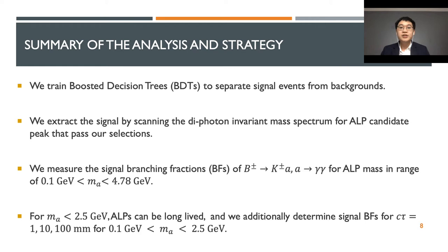Next, we train a boosted decision tree to separate signal events from the predominant background. We then extract the signal by scanning the diphoton invariant mass spectrum for axion candidate peaks that pass through all of our selections. Finally, we measure the branching fraction for axion production from B meson decay.